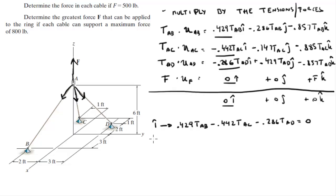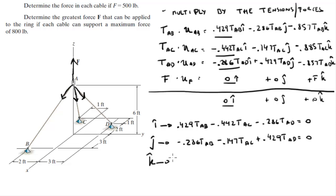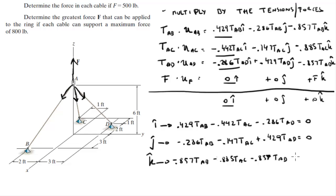The j-equation gives: −0.286 T_AB − 0.147 T_AC + 0.429 T_AD = 0. The k-equation gives: 0.857 T_AB + 0.885 T_AC + 0.857 T_AD = F. Note that all terms on the left are negative so we move F to the right side and make them all positive. Now replace T_AB with x, T_AC with y, and T_AD with z for easier algebra.